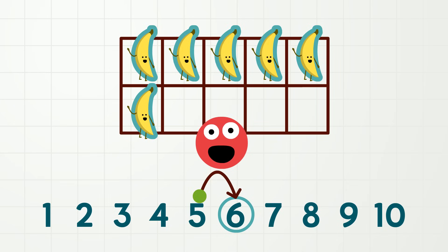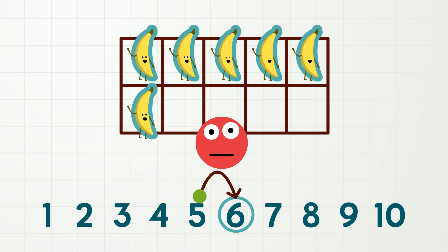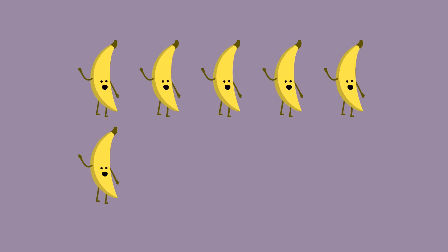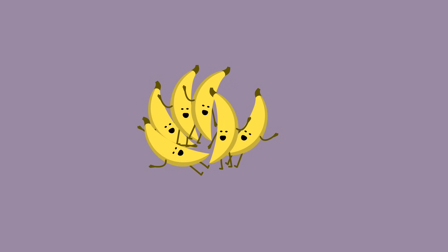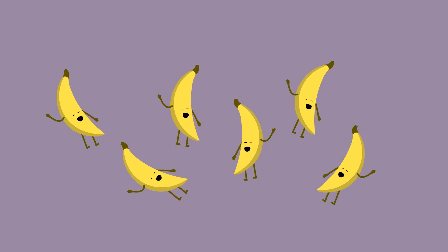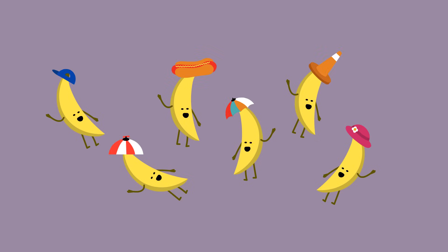If you estimated that there were 6 bananas, good job! If you estimated that there were 5 bananas, also good job! Because 5 is close to 6. Want to know something? 6 bananas don't always look exactly like this. They could look like this, and there would still be 6. They could also look like this, and there would still be 6. They could also even all have funny hats, and there would still be 6!